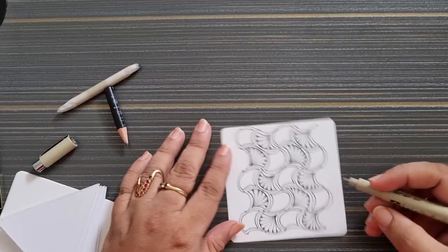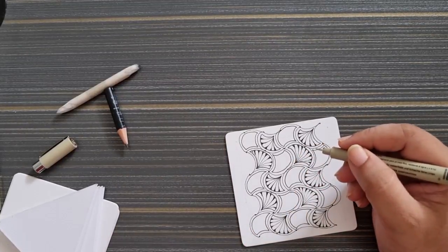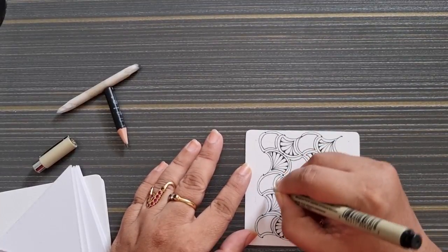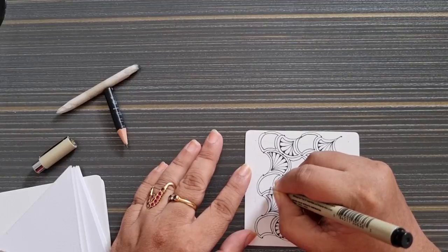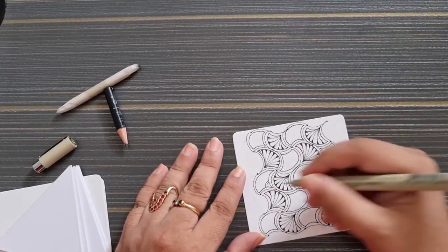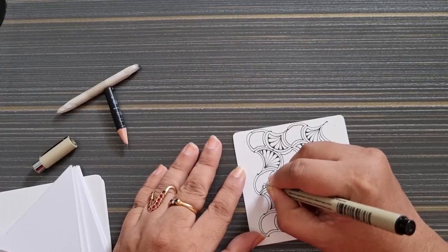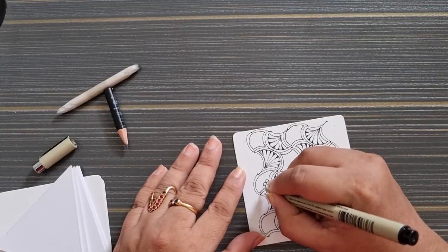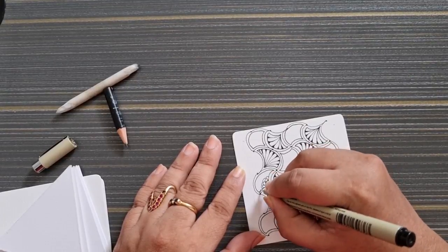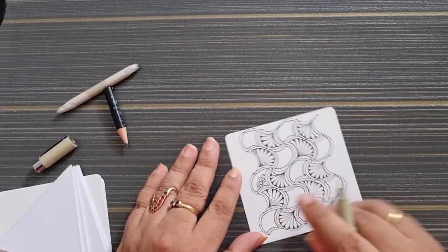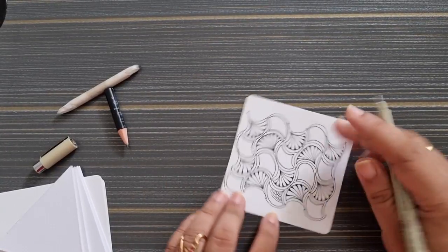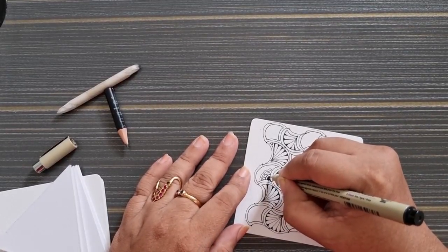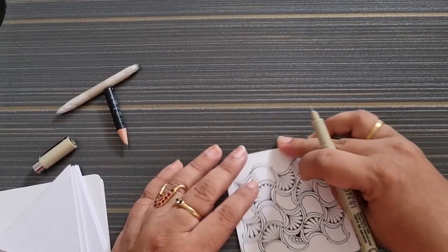Now, since we have completed this part, let us create a new tangle called Moon Pie. It is nothing but an extension of Crescent Moon that we just added to any corners, with slight fun variations. I think I can even darken this space, just ink it well. It looks very interesting.